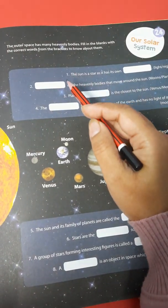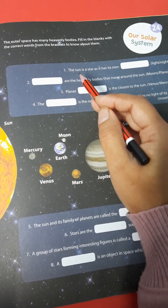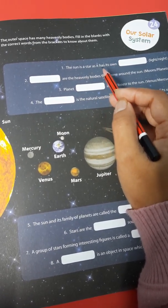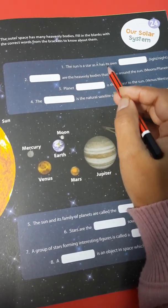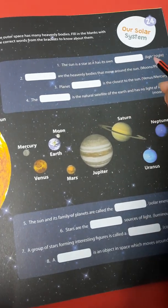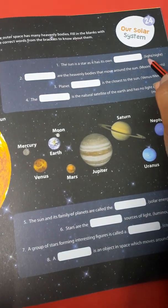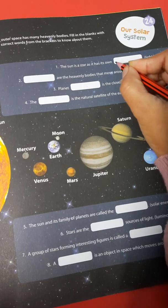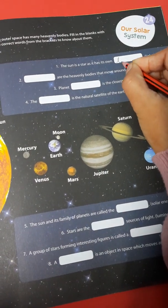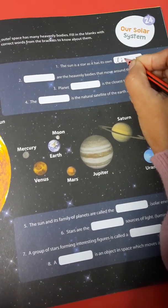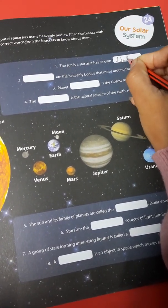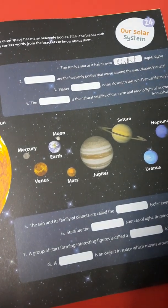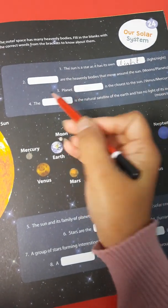Number 1. The sun is a star as it has its own light. It's light. You write here: L-I-G-H-T. Light.